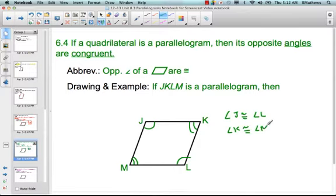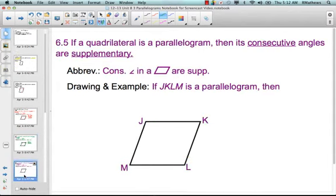Next we have 6.5. Again, if quadrilateral is a parallelogram, then its consecutive angles are supplementary. And so when we're talking about consecutive angles, we mean one right after another. So if I start at one corner of the parallelogram and go around, these are consecutive angles. L and M are consecutive, M and J are consecutive, JK consecutive, KL consecutive.